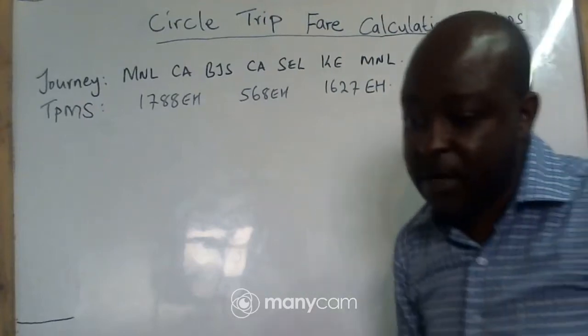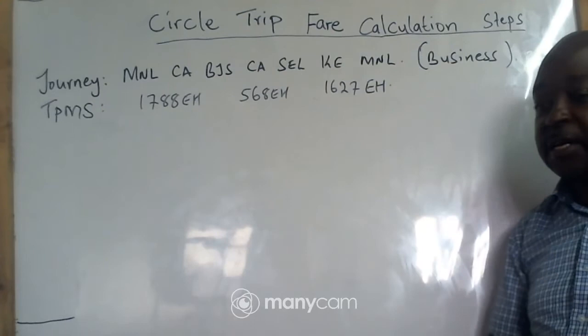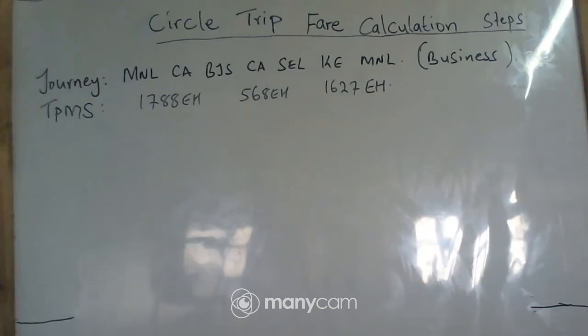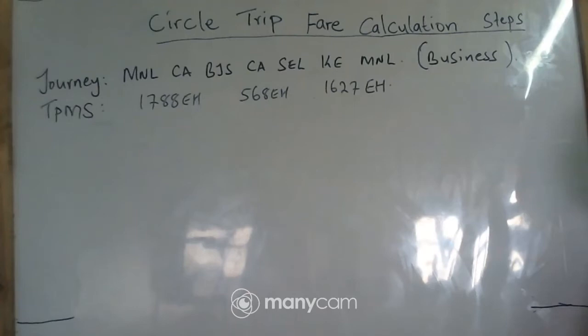Now let us look at circle trip fare calculation. Initially we looked at the types of journeys: we had one way, we had return, and under return we saw the round trip. Today we want to look at circle trip, and then we shall have another one as round the world, and then we shall also look at open jaw as time goes.